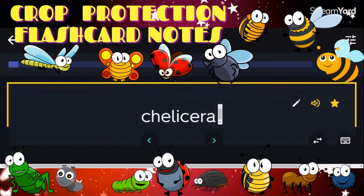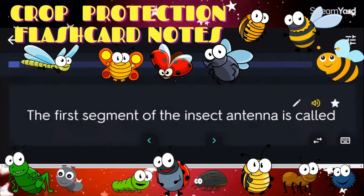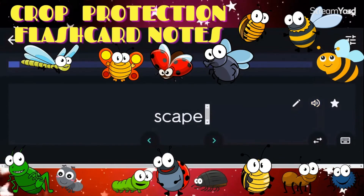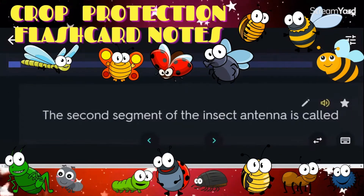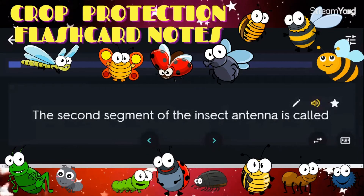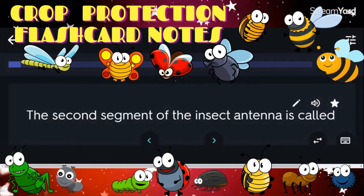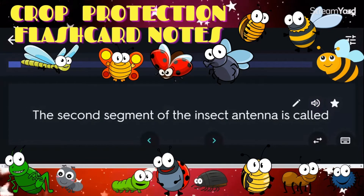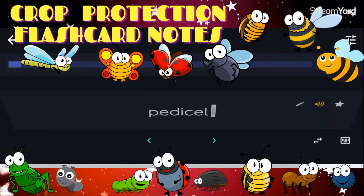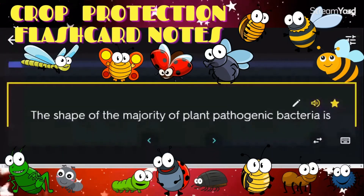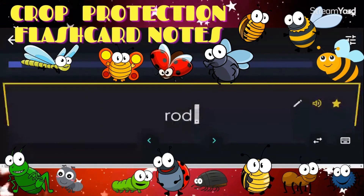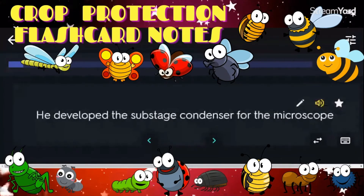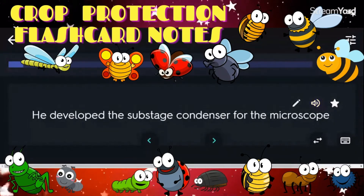The first segment of the insect antenna is called the scape. The second segment of the insect antenna is called the pedicel. The shape of the majority of plant pathogenic bacteria is rod. He developed the substage condenser for the microscope: Abbe.